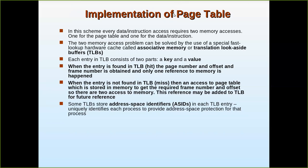When the entry is not found — for example, page number 3 has not been referenced yet — it will not be in the associative memory. This is called a TLB miss. Then the page table stored in main memory is accessed to get the frame number and offset, requiring two memory accesses. This reference is then added to TLB for future use. So on any access, the associative memory is checked first. If not present there, the main memory page table is accessed, and that reference is copied into the TLB.